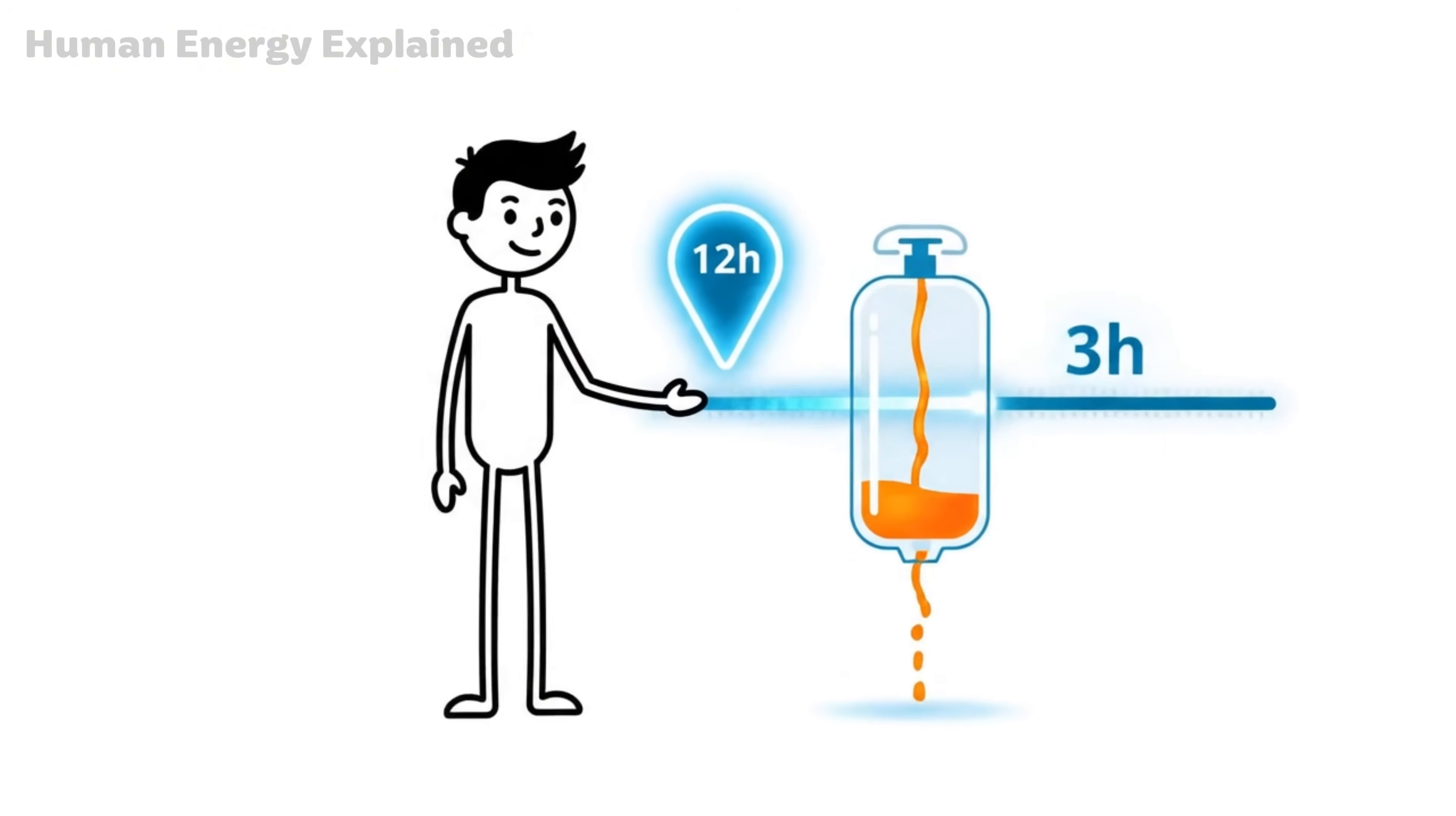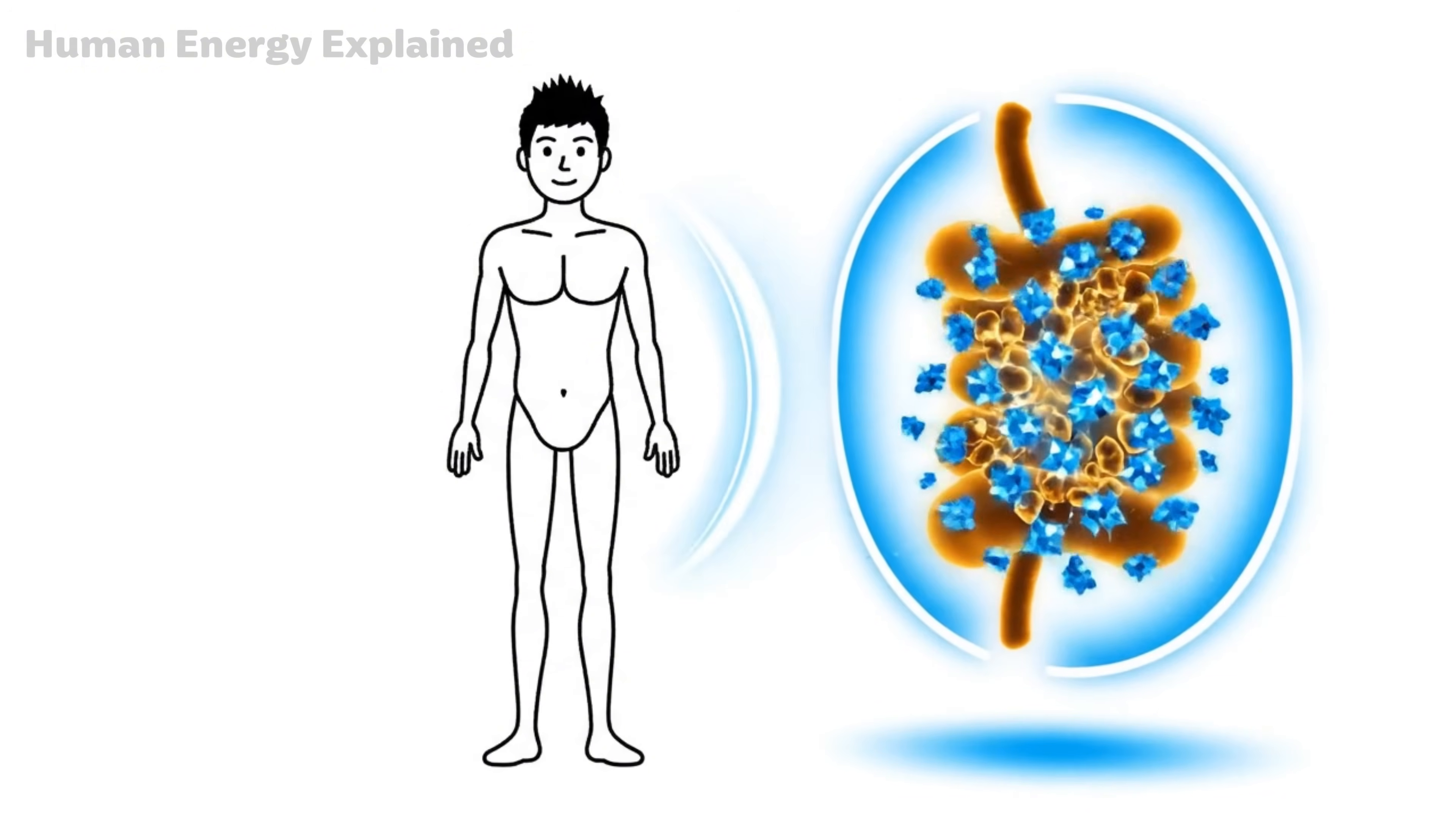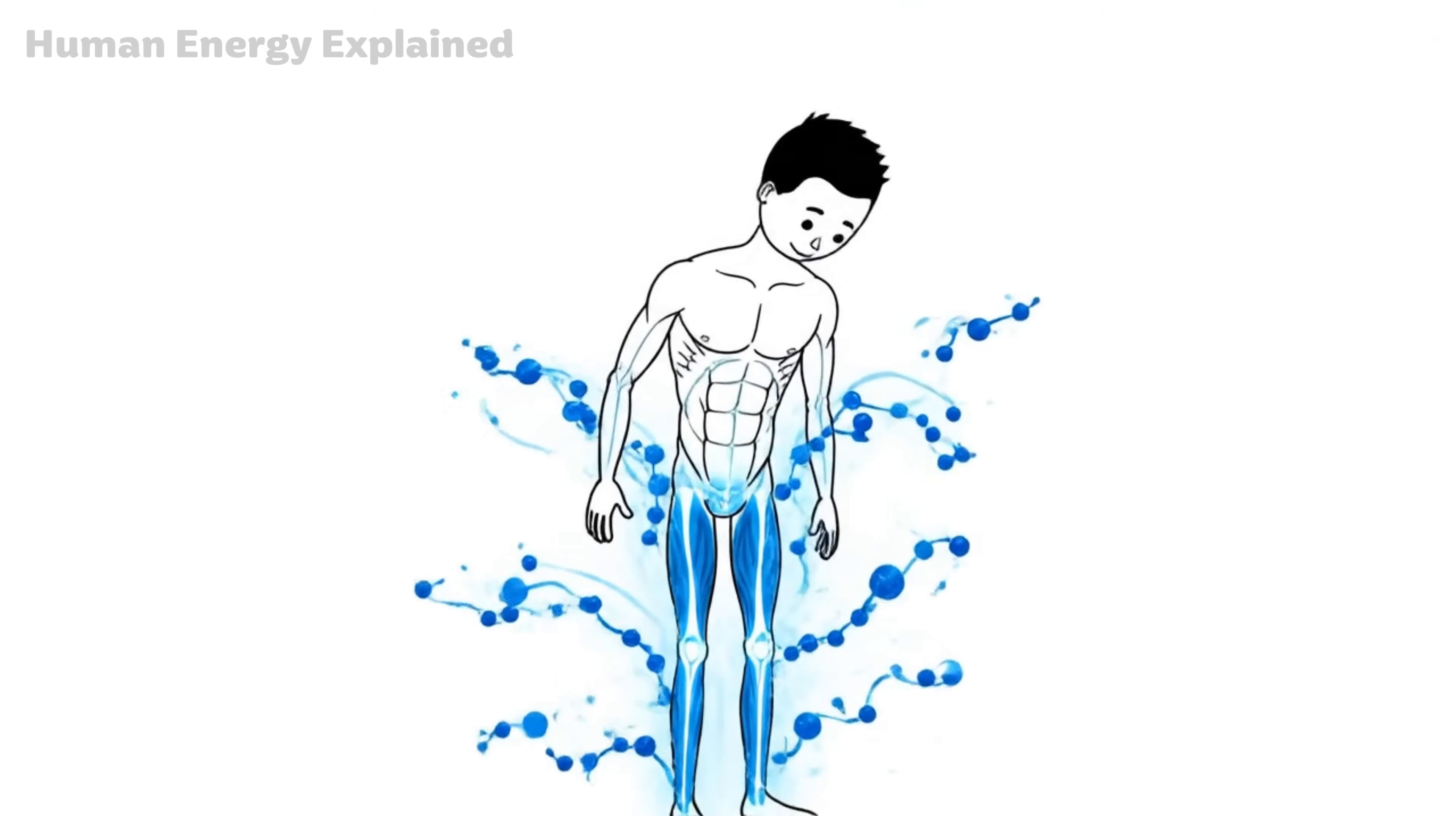Push through to hour 12 and your body crosses a line. Glycogen stores are running low. Your liver looks for another energy source, and it finds one: fat. Your body begins breaking down fatty acids and converting them into something called ketone bodies. This is the metabolic switch, the moment your system shifts from burning sugar to burning stored fat.